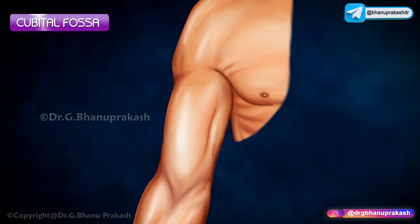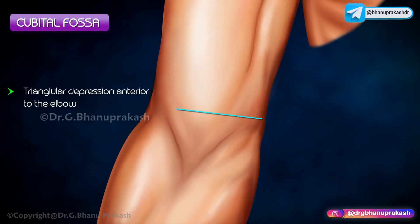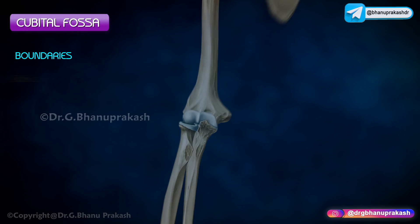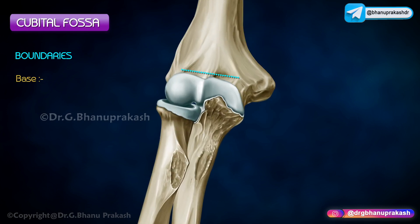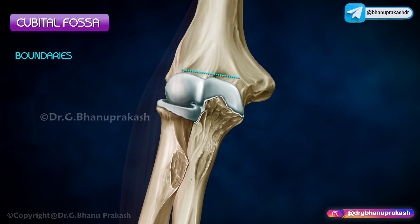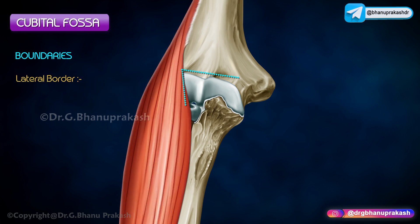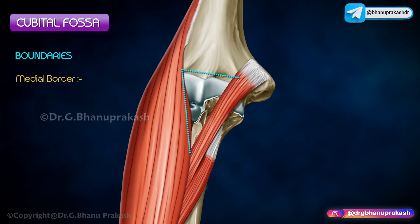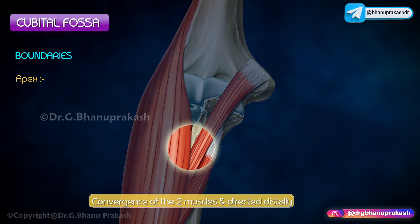The cubital fossa is a triangular depression anterior to the elbow. The base is an imaginary line between the medial and lateral epicondyles of the humerus. The lateral border is formed by the medial border of brachioradialis. The medial border is formed by the lateral border of the pronator teres. The apex is a convergence of the two muscles and is directed distally.